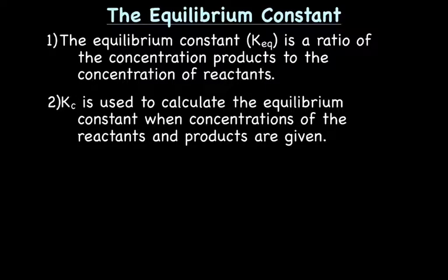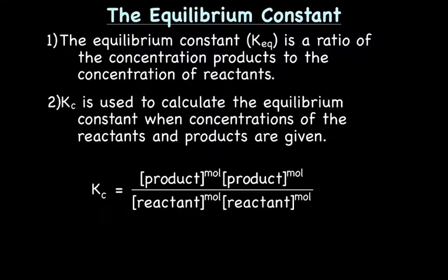To calculate KEQ, we can use KC, and we use KC when concentrations of reactants and products are given. So the equilibrium constant of concentration, KC — written a bit differently than you've seen before — KC equals the concentration of the product to the number of moles of that product, times the concentration of the next product to its number of moles, and so on, over the concentration of the reactant to its mole power, times the rest of the reactants.